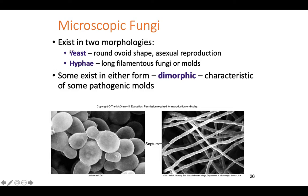Some species exist only as yeast, some only as hyphae, and some can do both — these are called dimorphic, from 'di' meaning two and 'morph' meaning shape. Some pathogenic mold species can switch forms, but most microscopic fungi species are one or the other and cannot change.